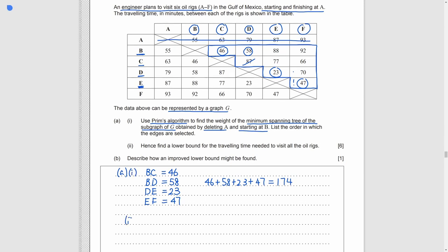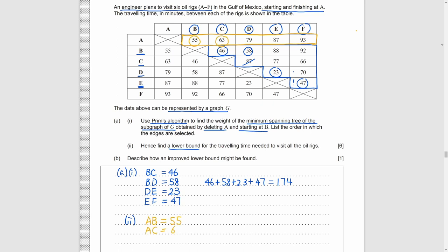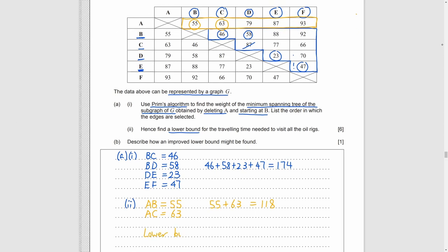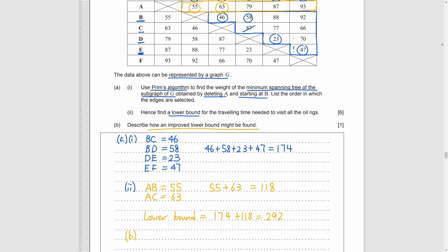Next part, we need to find the lower bound for the traveling time. As we need to start from A and finish at A, so we just choose the lowest two entries from the row of A. That is AB 55 and AC 63. So we just add them together with the answer we got before. Part B. Mention a way to improve the lower bound. We can just use the same method again but deleting another vertex instead of A.